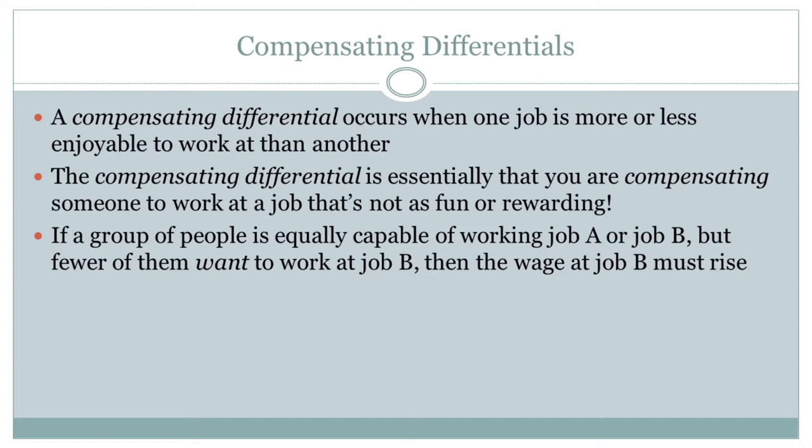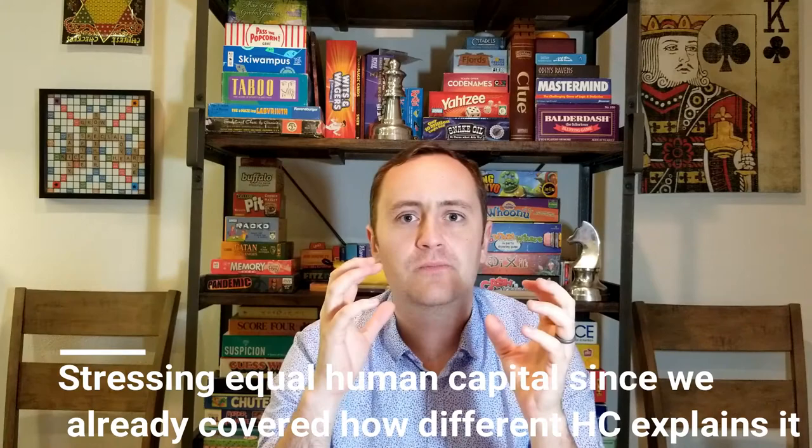Let's start with compensating differentials. A compensating differential occurs when one job is more or less enjoyable to work at than another. You have to compensate somebody — pay them to make up for the fact that they're working at your crappy job that they don't want to do. Imagine you have two jobs — job A and job B — requiring the exact same set of skills and attracting people with the same level of human capital, so there's no difference in productivity. But job A is a lot more fun. More people want to work at it. Nobody wants to work at job B.